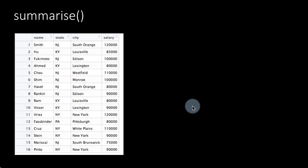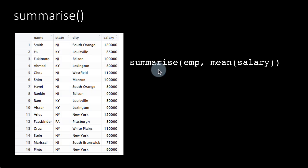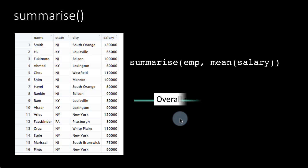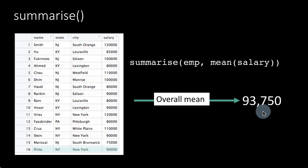If we just read the entire data set and simply said summarize m, mean salary — notice that I didn't choose to give a name to this column. If you don't give a name, then it'll simply choose this itself as the name, so you'll see mean salary as the name of that column. Obviously what you're going to get is simply the overall mean, which happens to be $93,750. This is a whole table summary, just like we looked at in the previous lecture.